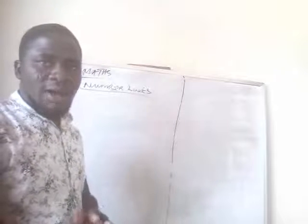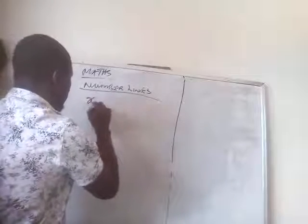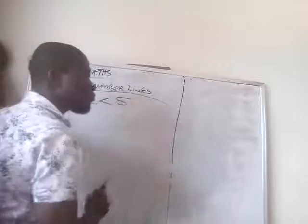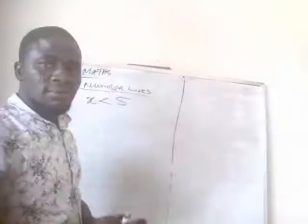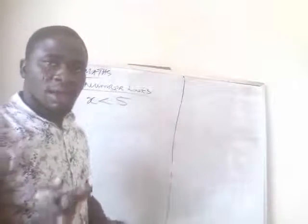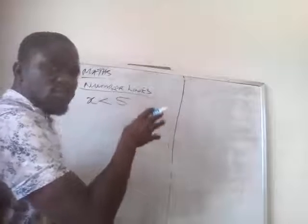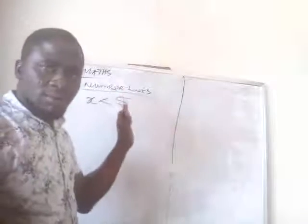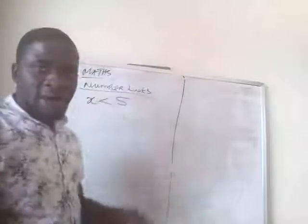When you have X is less than 5, it means from this 5, the line will start going from 5 to 4, 3, 2, 1, and so on. That is, X is less than 5. Let me show you.